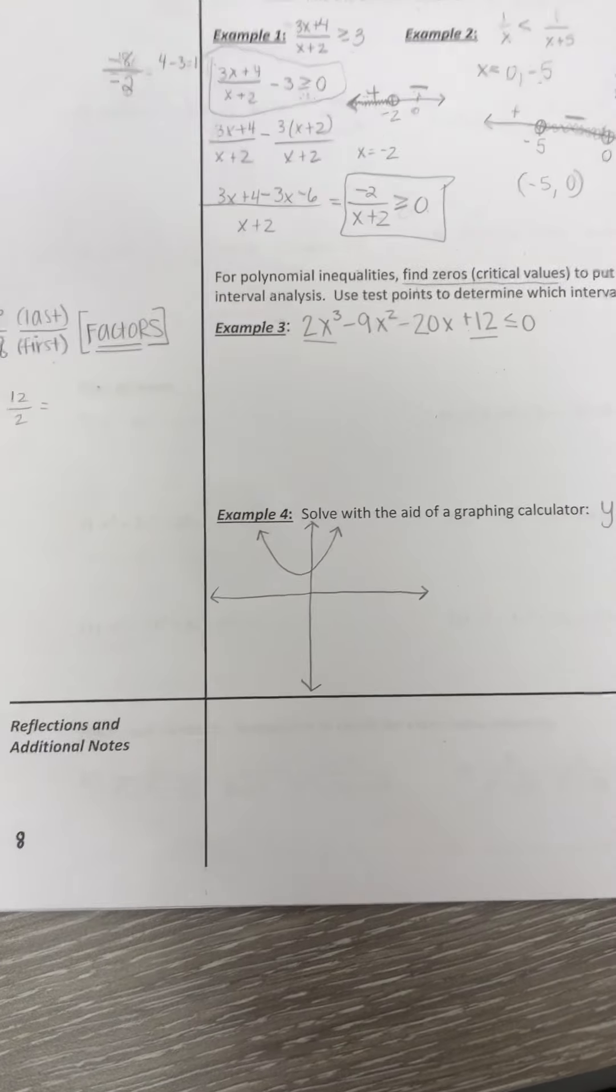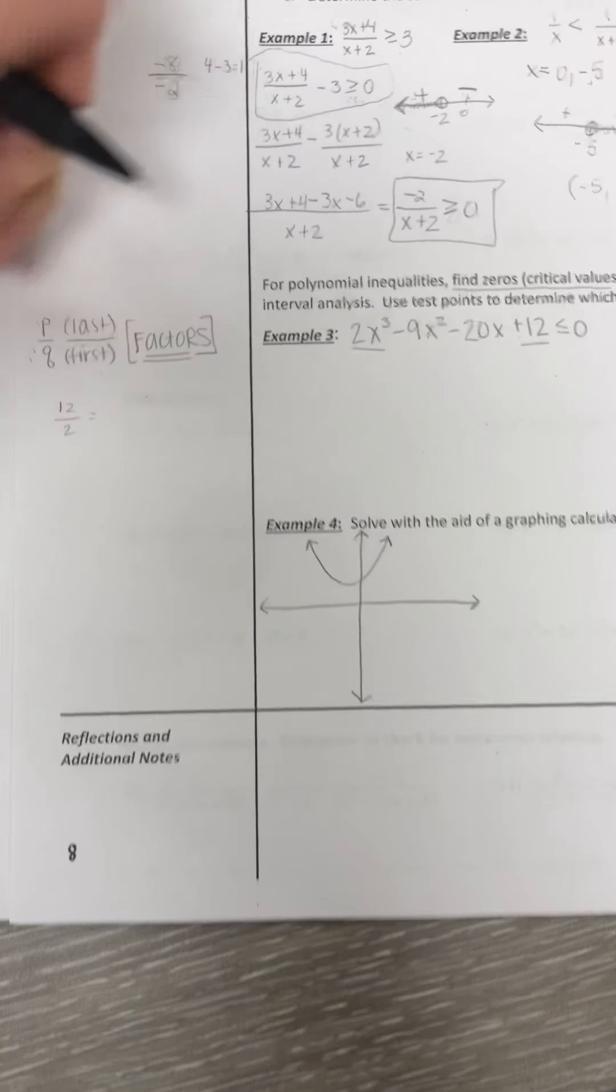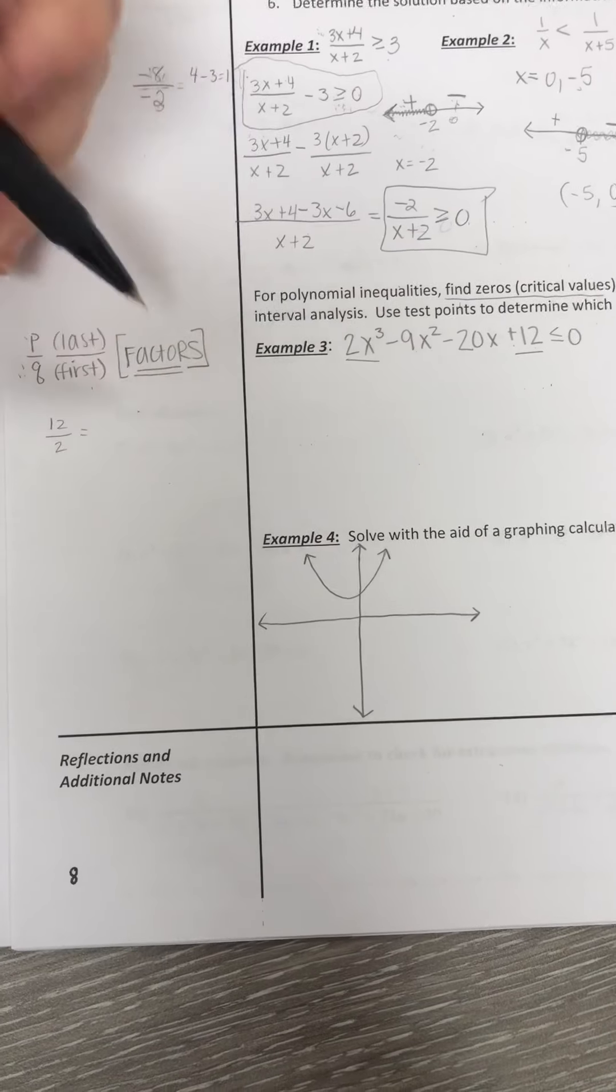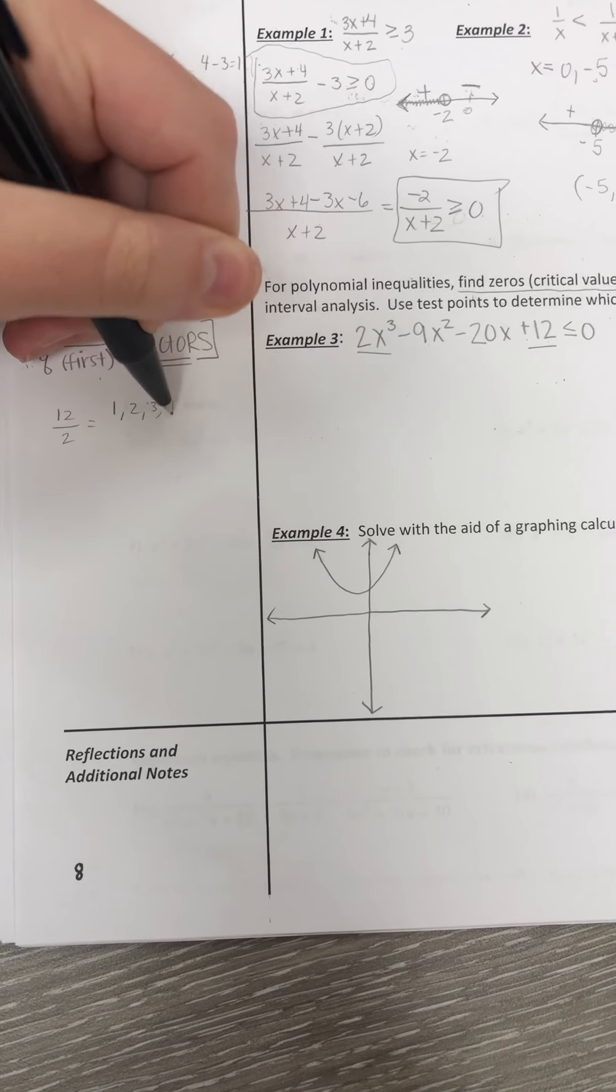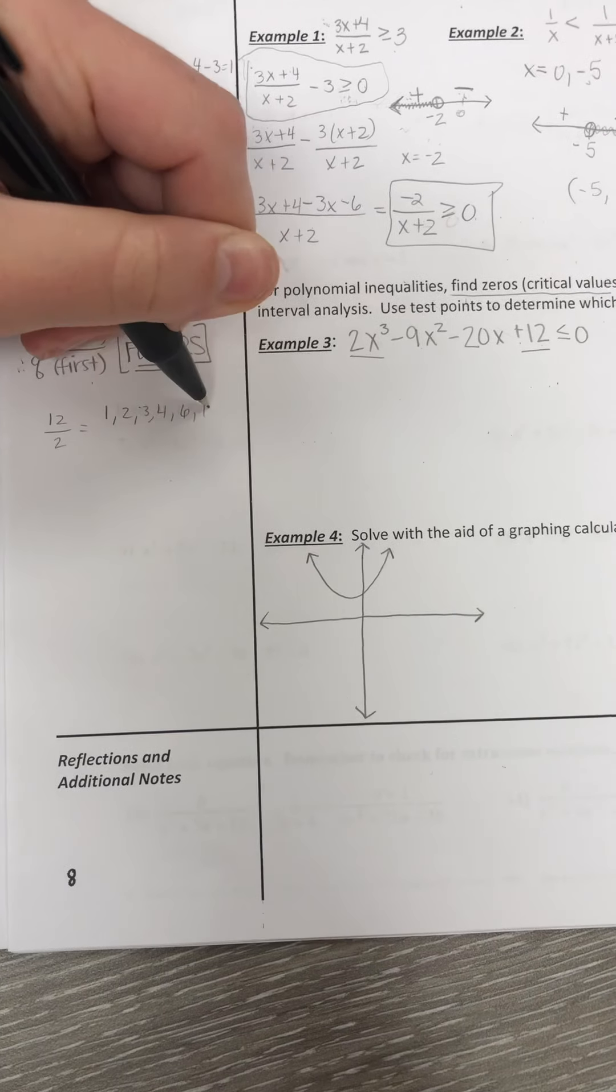So we've got 12 and 2. So once we put that up, we find the factors of each. So you put the last over the first, and then you find the factors of each one. So for 12, we have 1, 2, 3, 4, 6, and 12.